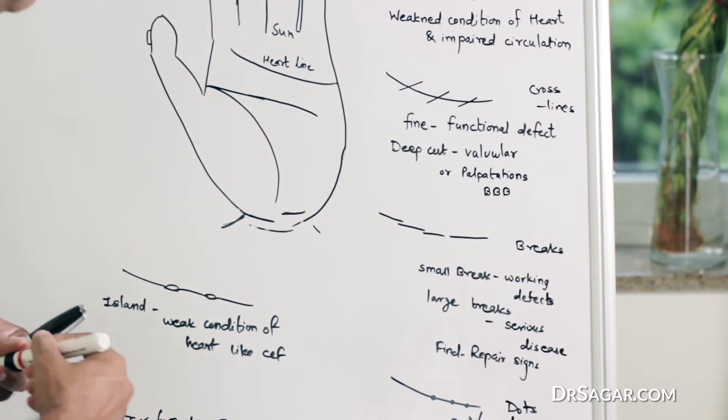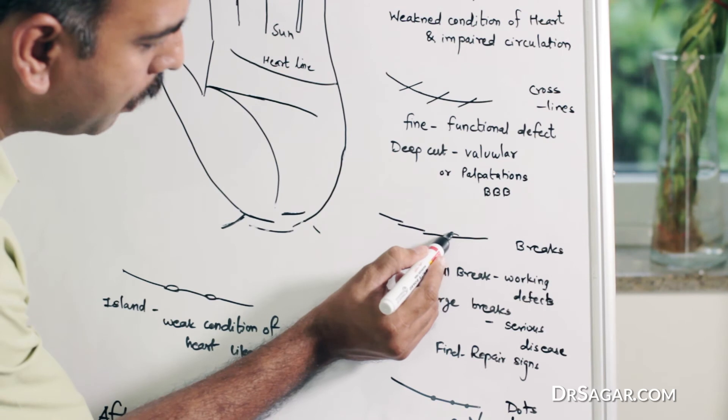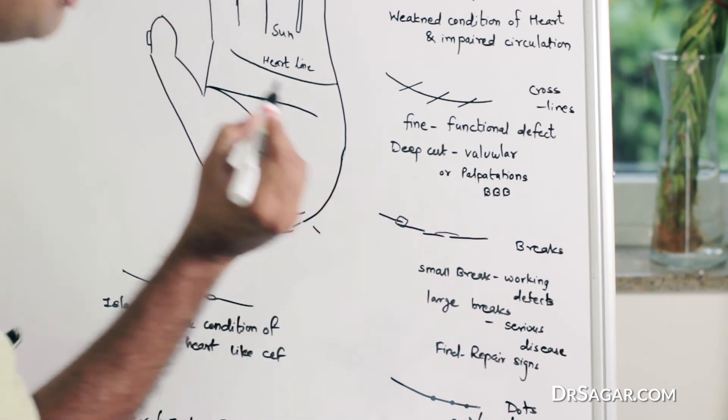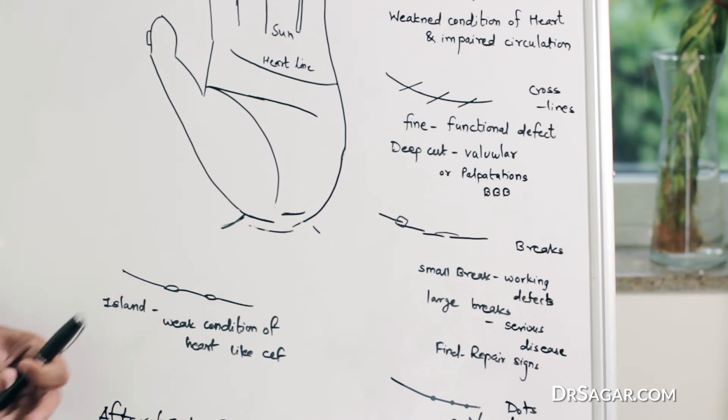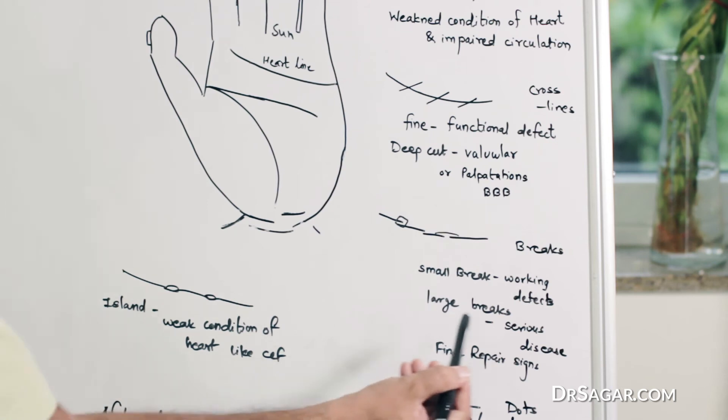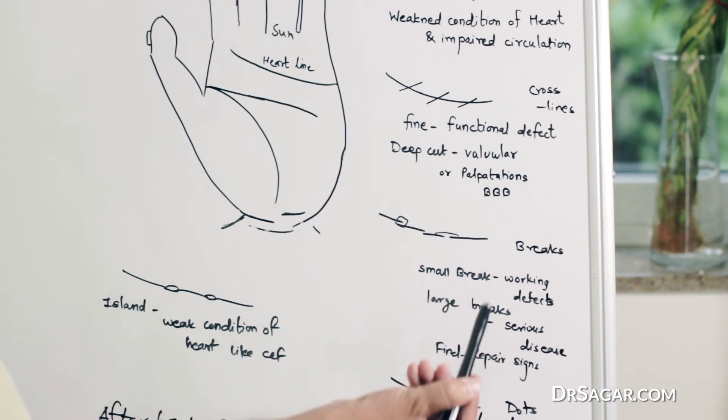Sometimes, the break is overlapped by other lines, or it has a square sign, which repairs this heart line. If it is repaired, then the serious condition comes, but with the medicine, the patient is cured.